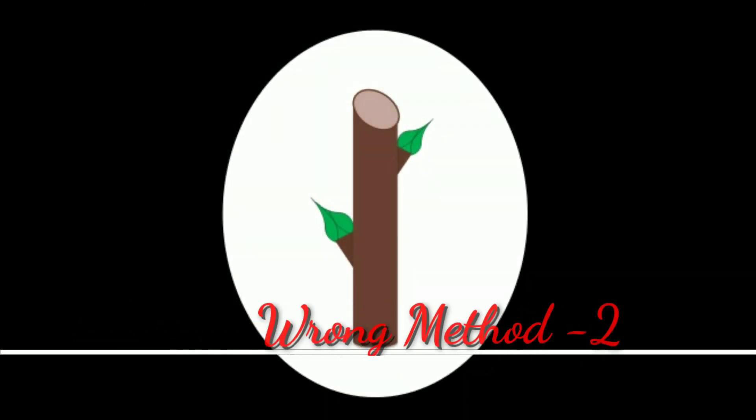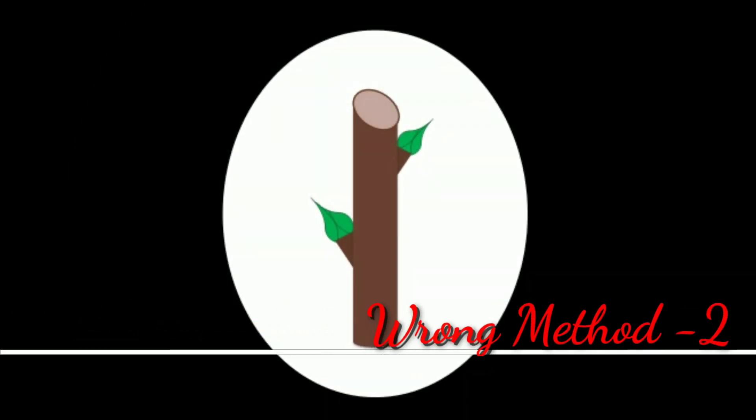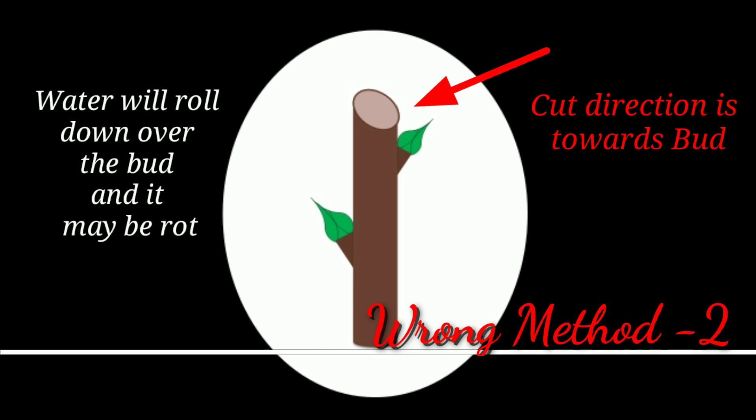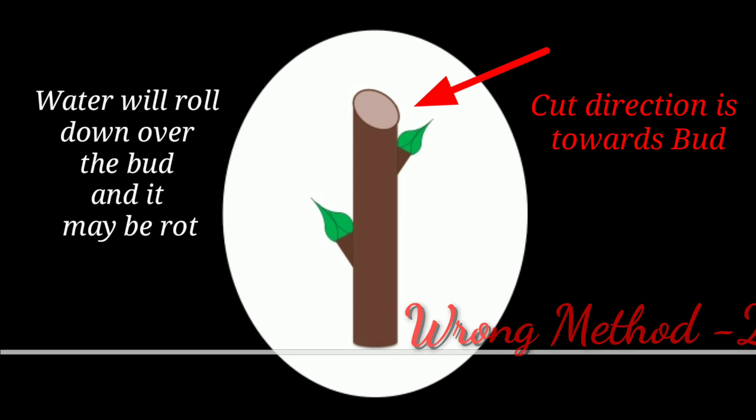Now please see this second picture of the wrong practice. In this picture you can see that the pruning cut is angular but the angle direction is towards the growing bud, and due to this the water will roll down over the bud and it will start to rot. So we should also avoid this type of wrong practice of the pruning process.